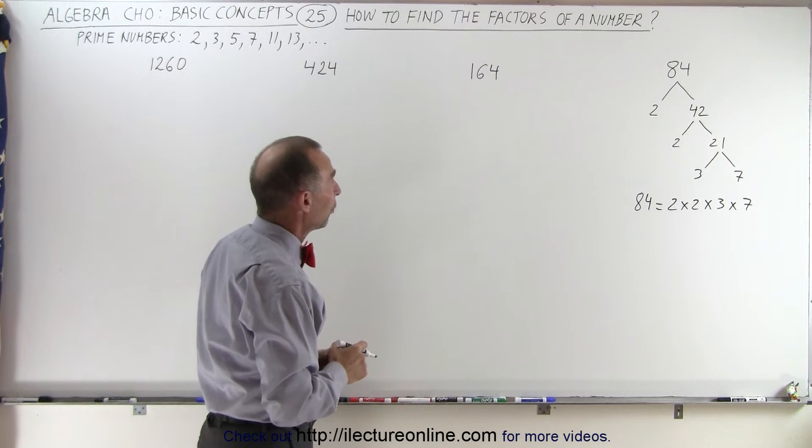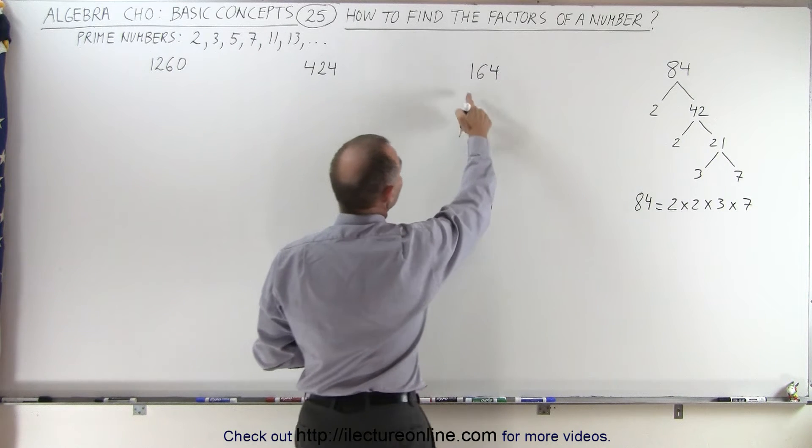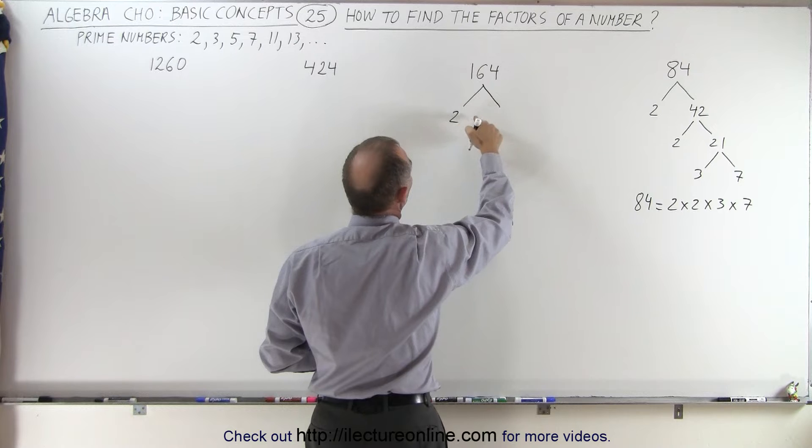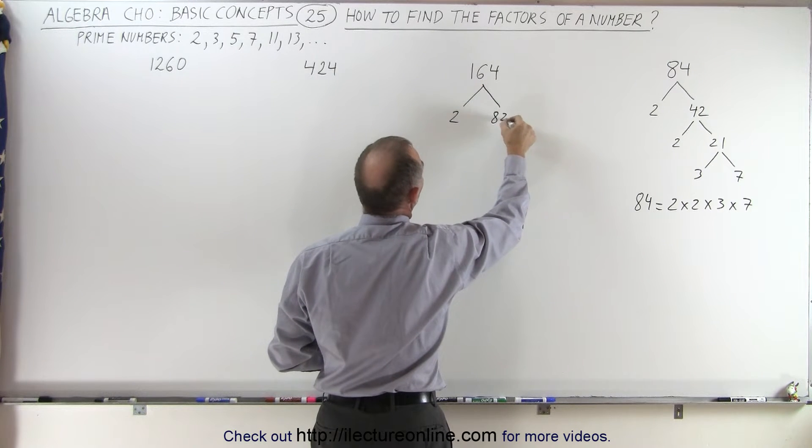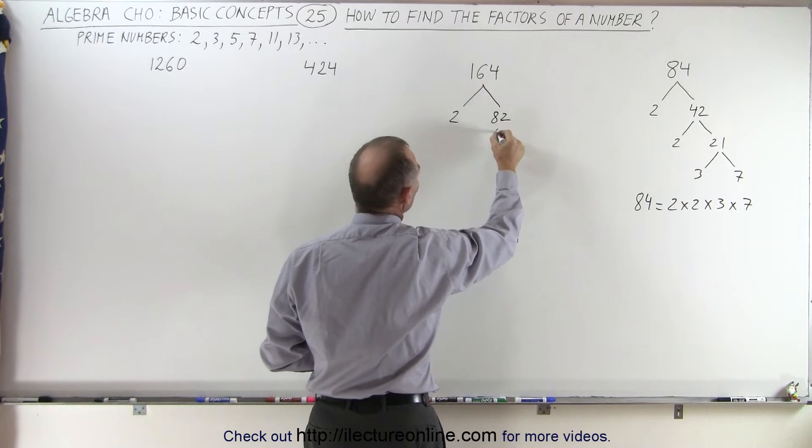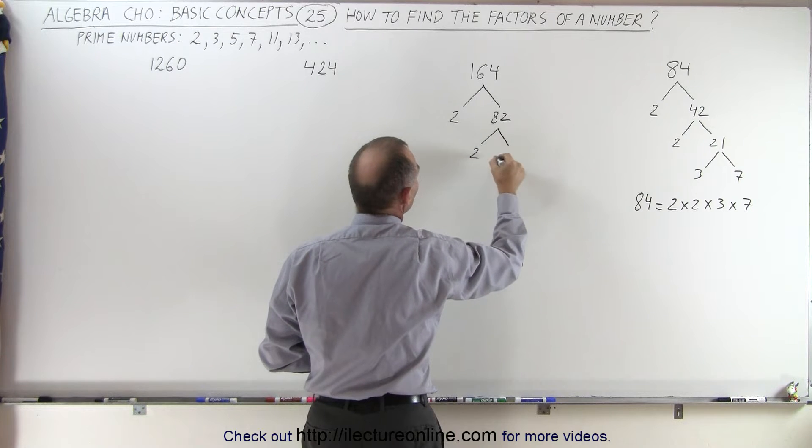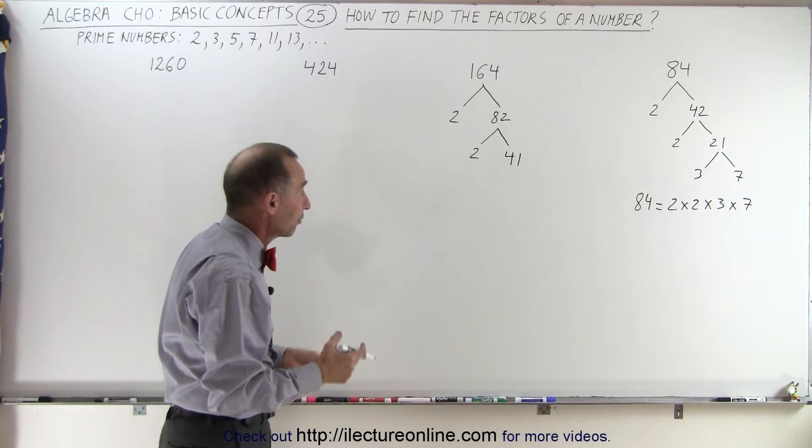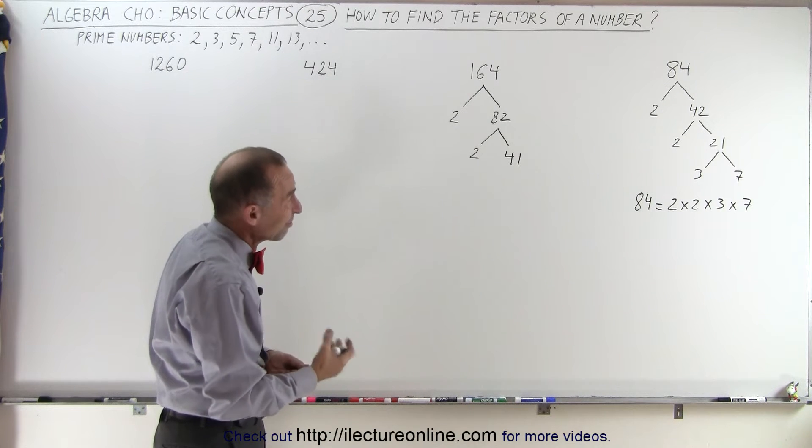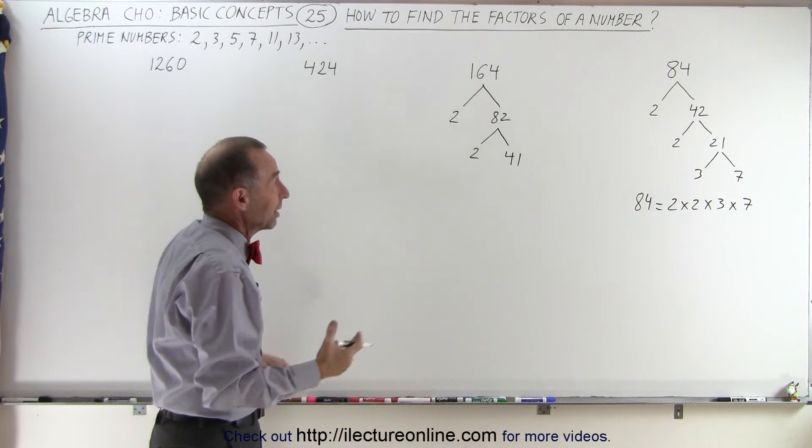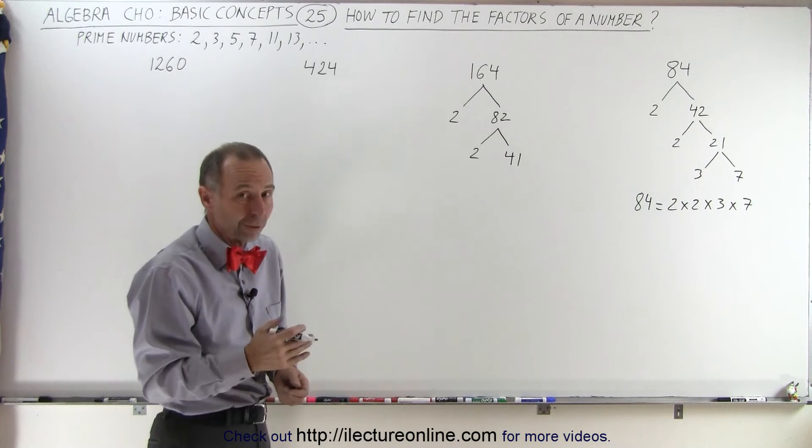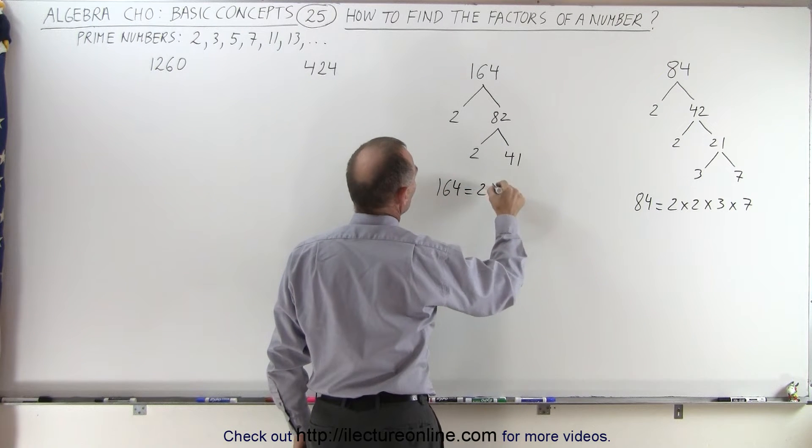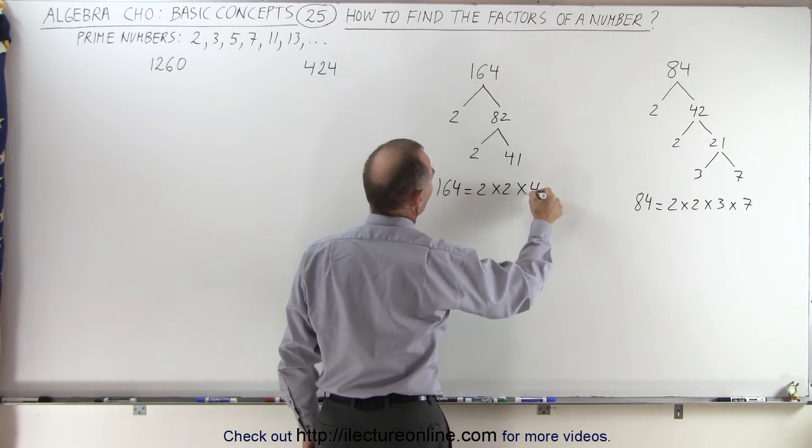The same with 164. We start out by saying it's even, so we can write this as the product of 2 times 82. It's still even, which means we can divide 2 into it again, we get 41. Now 41 is a prime number. You can try dividing 41 by 2, by 3, by 5, by 7, by 11, by 13, by 17, by 19, it just doesn't work. 41 is a prime number, so therefore 164 can be written as 2 × 2 × 41.